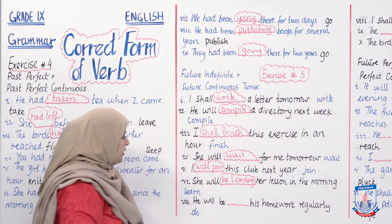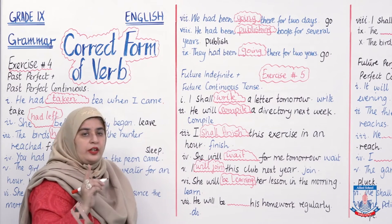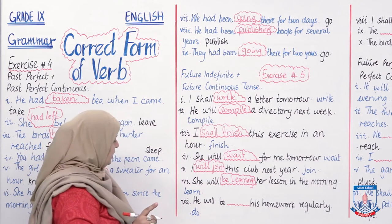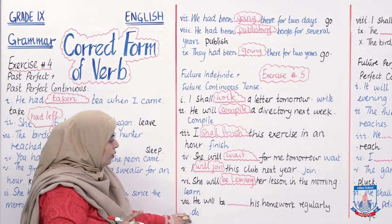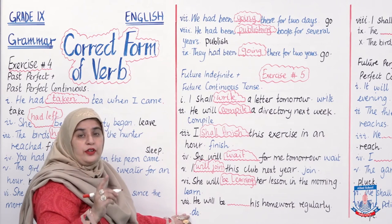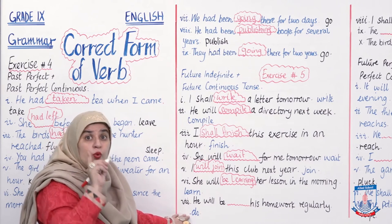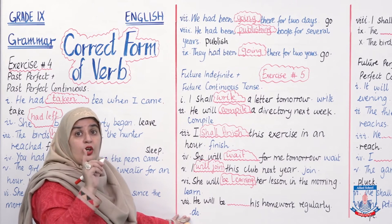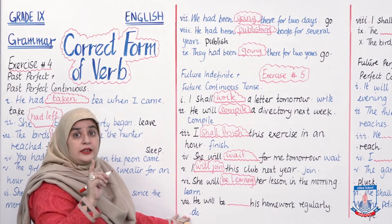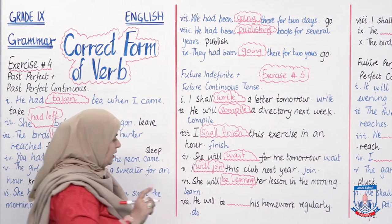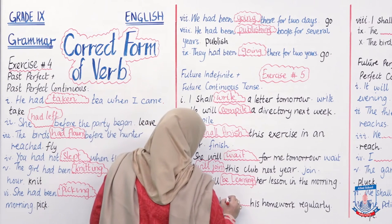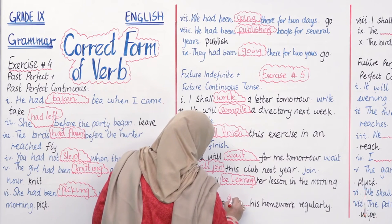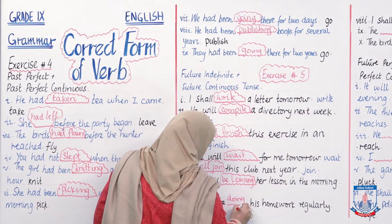'She will be ___ his homework regularly.' Something that he will be continuously doing. Answer: 'He will be doing his homework regularly.' Future continuous — will be + verb-ING.